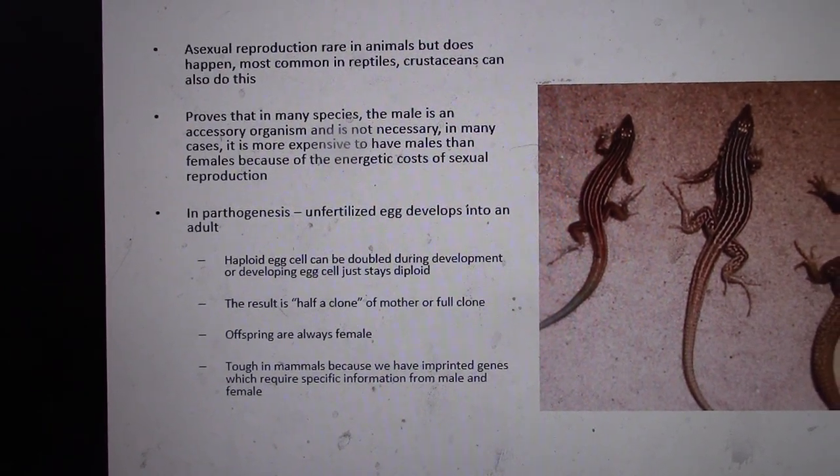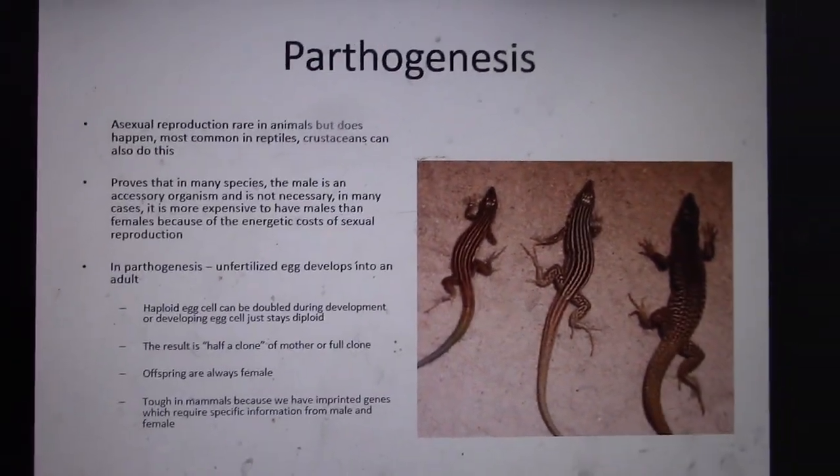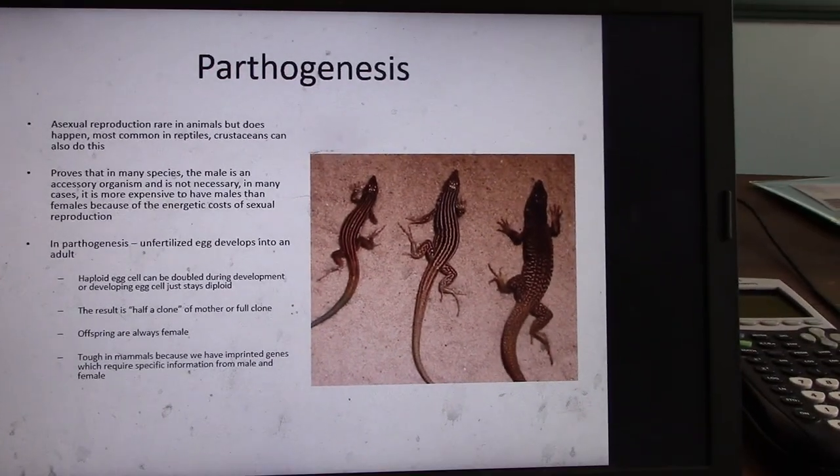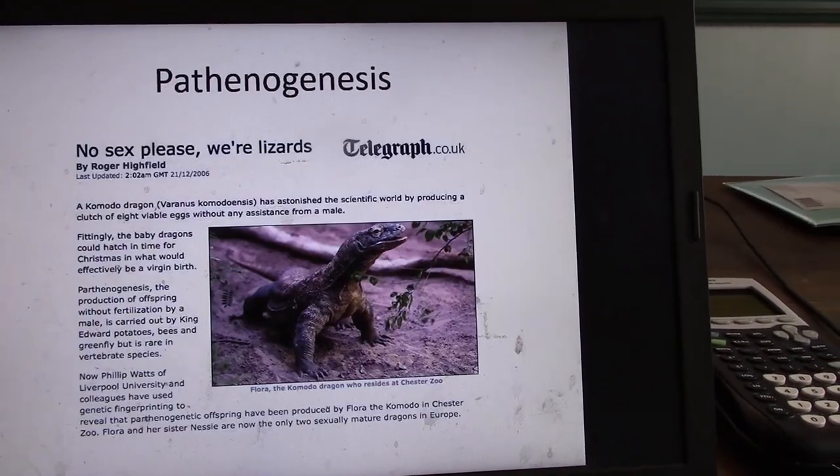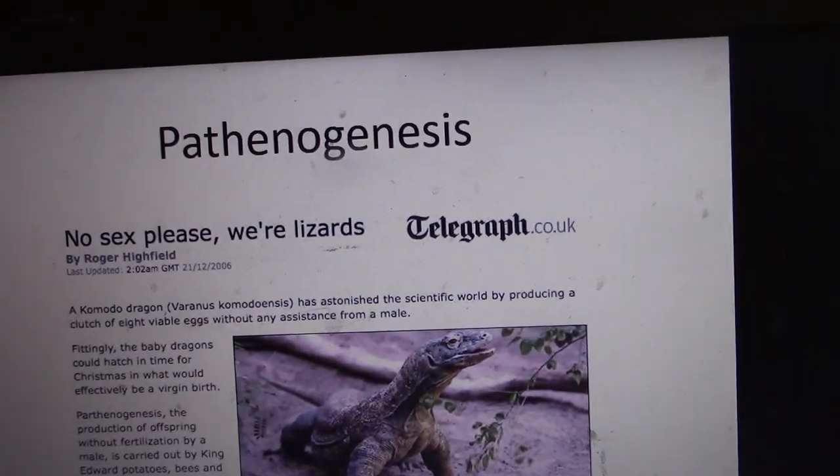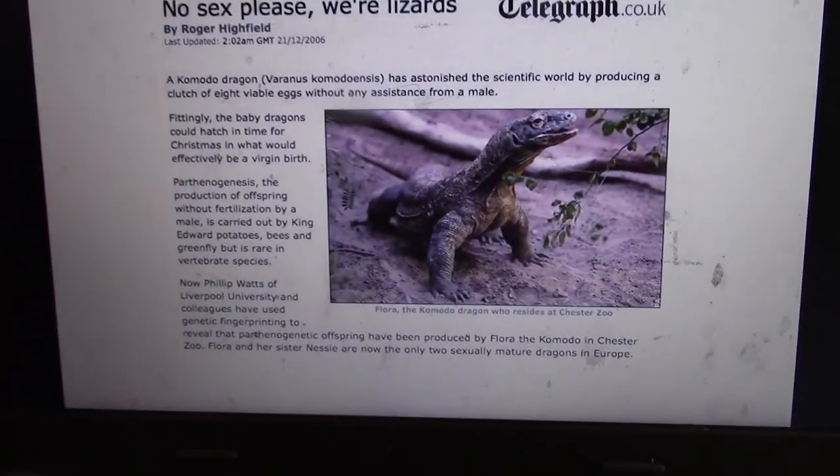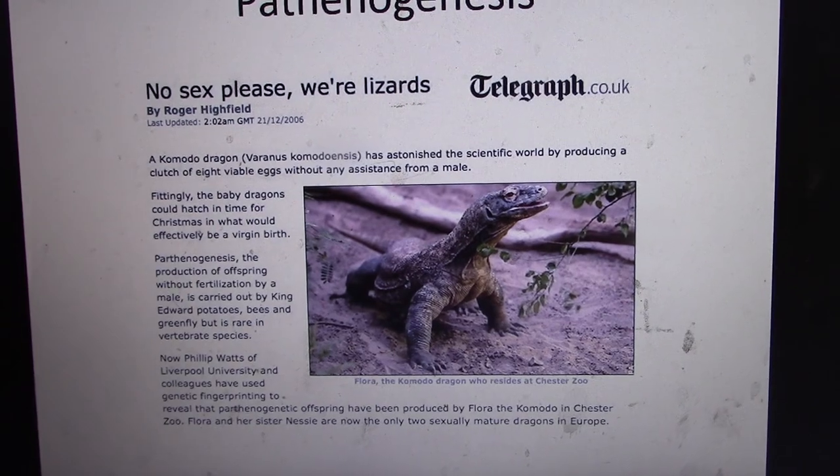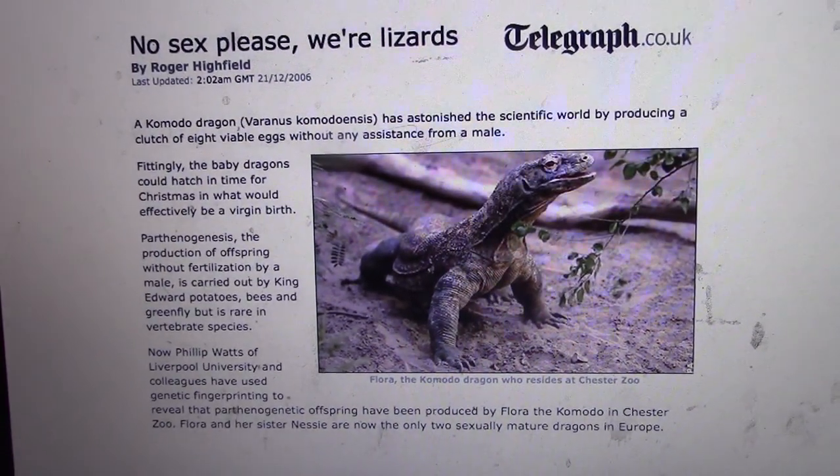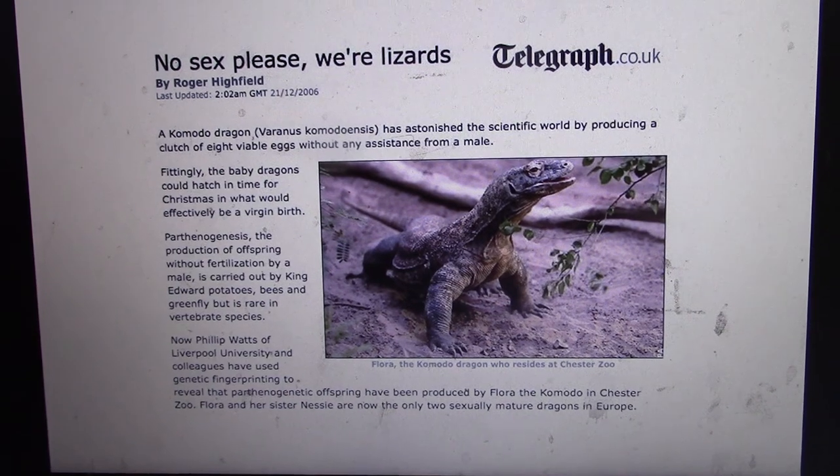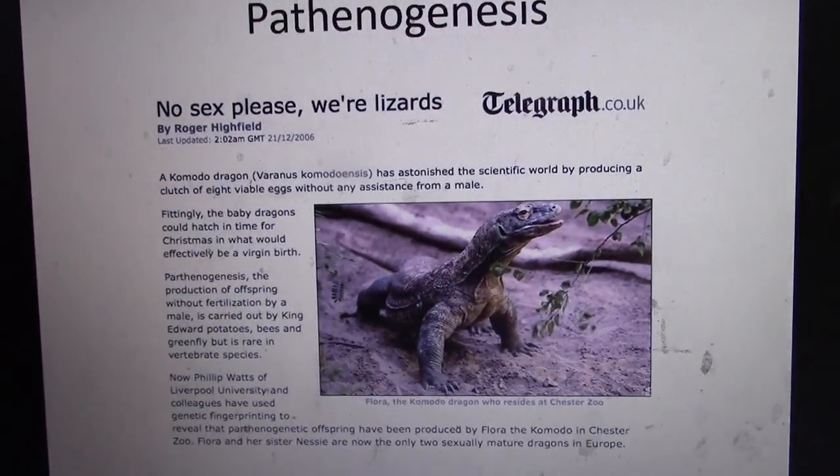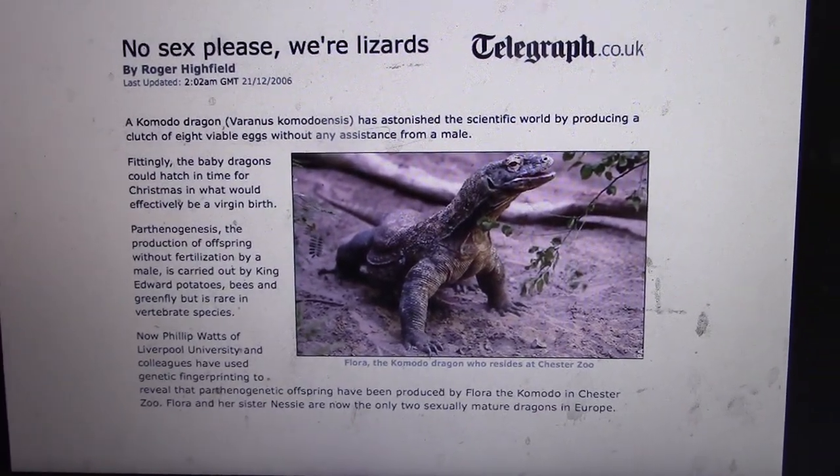The offspring are always female with parthenogenesis. Here is an article about that. This is an article about Komodo dragons. They don't need dudes. And in fact, some of these females actually use males as prey. So that's a little cutthroat.